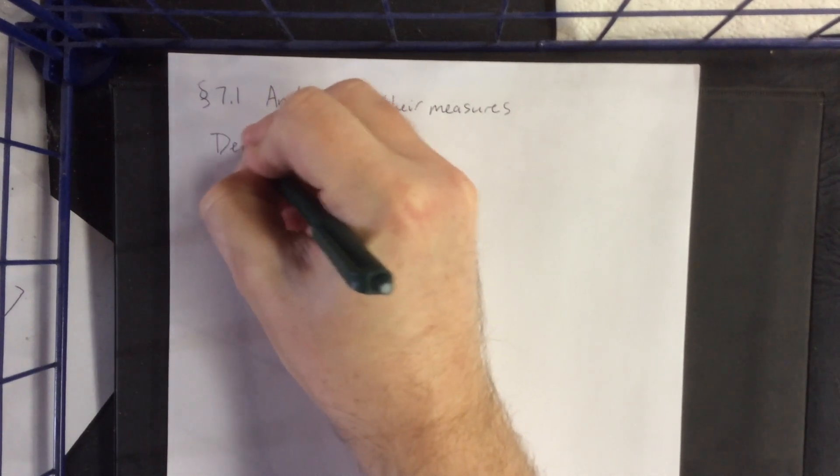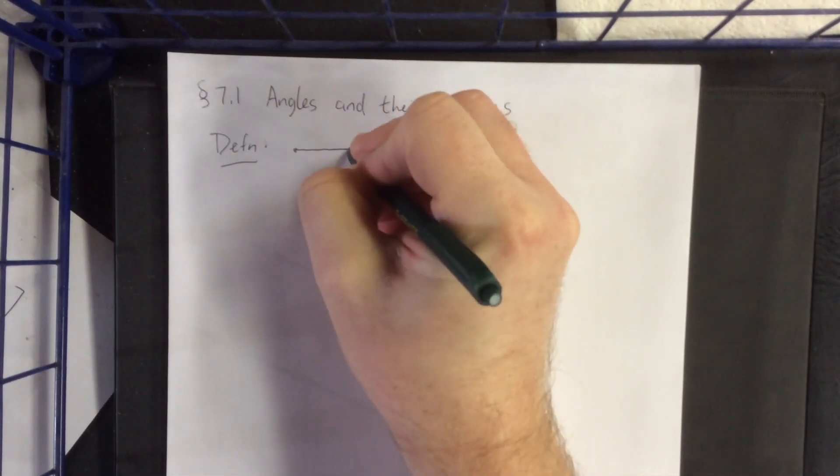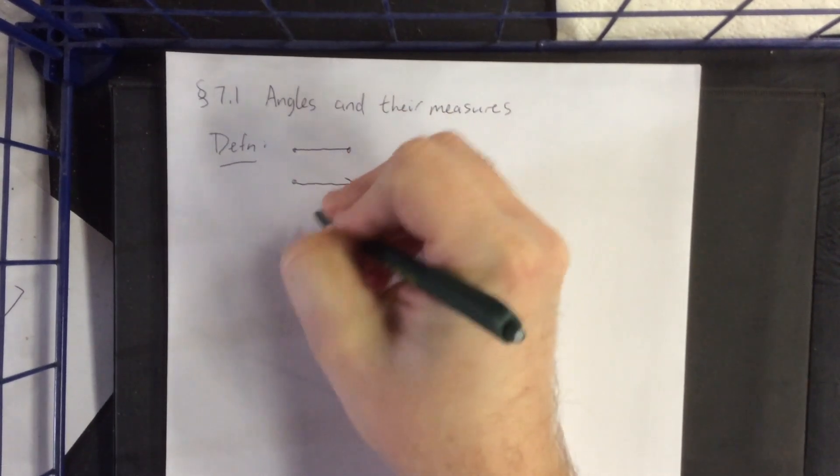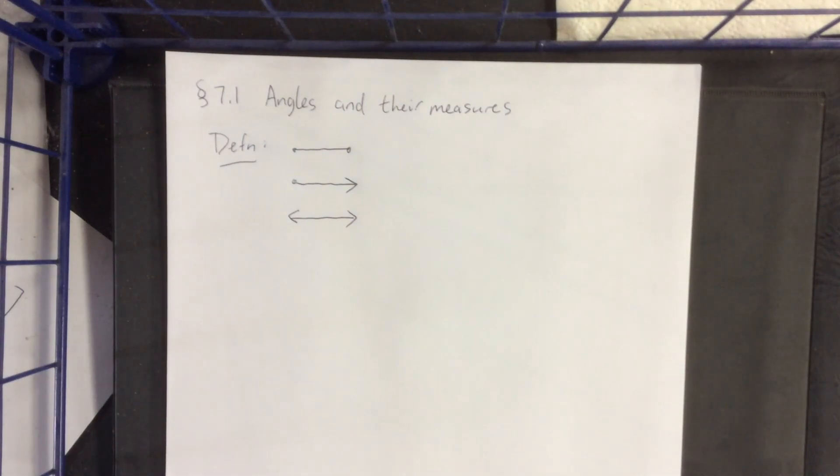So to start, we're going to start with the definition. The definition is going to involve things that are straight. There are three different portions of straight things that we can talk about.